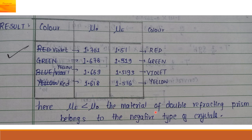Hence we say the material of the double refractive prism belongs to the negative type of crystals. So, if it is a calcite crystal, it is a negative type of crystal.